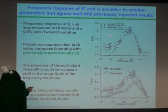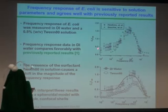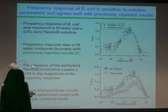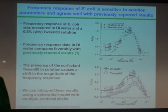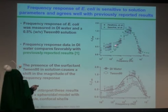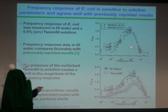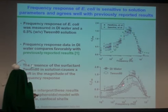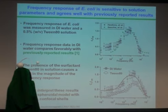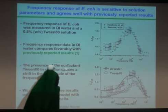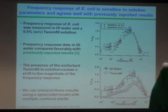Now, why might this be? This data is for E. coli, and we're comparing our data to data from a different investigator. Here is our data for E. coli, both with and without a surfactant. So why might I expect to see something different for a biological cell than I saw for the polystyrene bead?